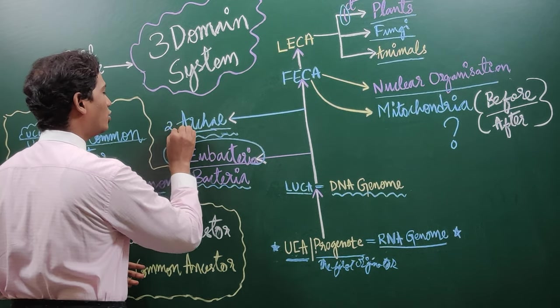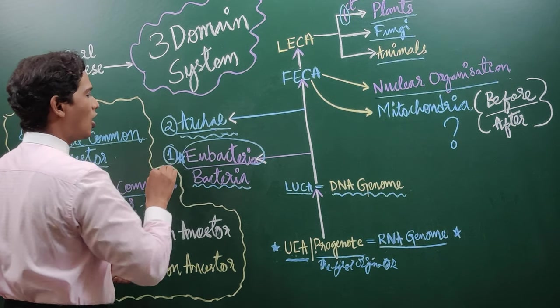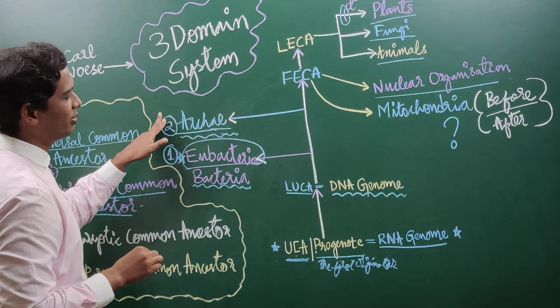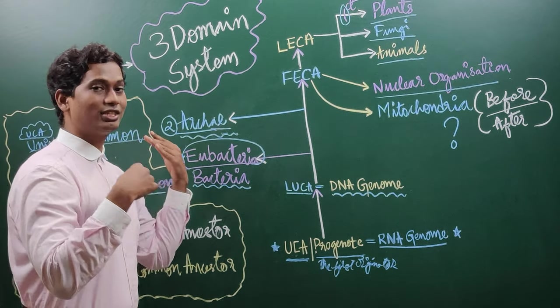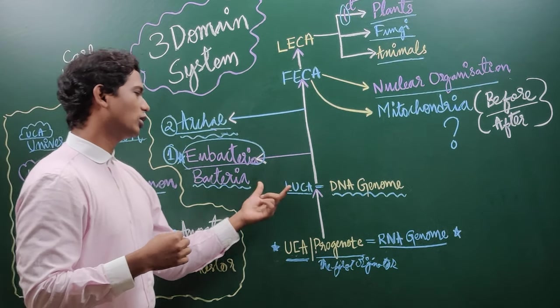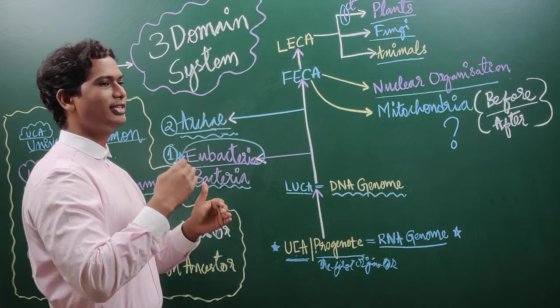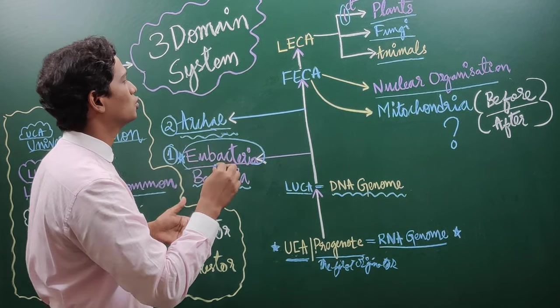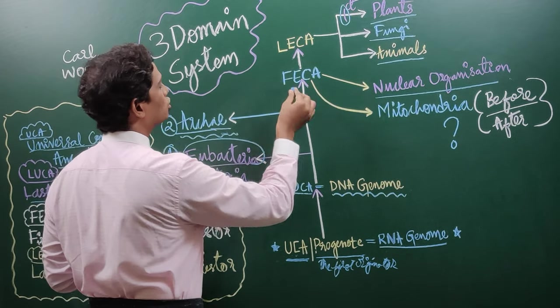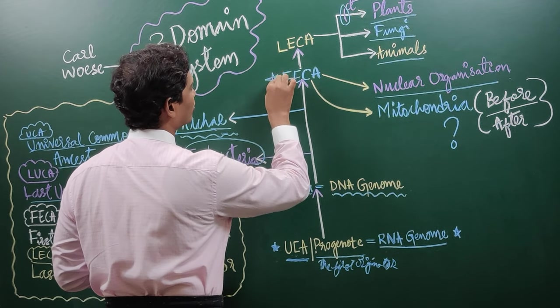And this is the second domain. We understood the first domain and second domain. What is the third domain, let us understand. LUCA, after giving rise to eubacteria and archaea, slowly started stretching its legs and gave rise to the very important and crucial event which is called as FECA.